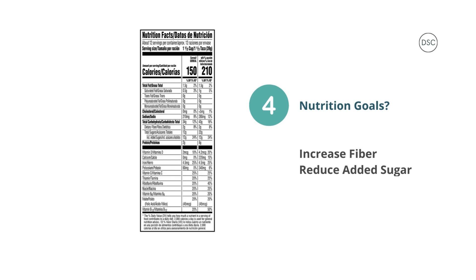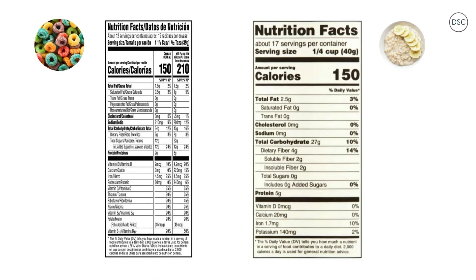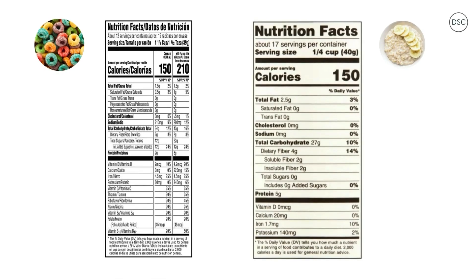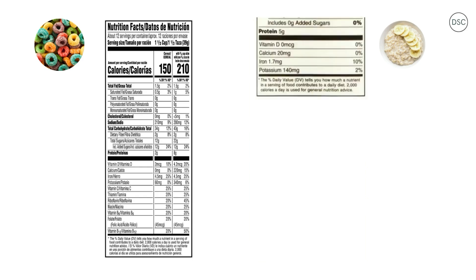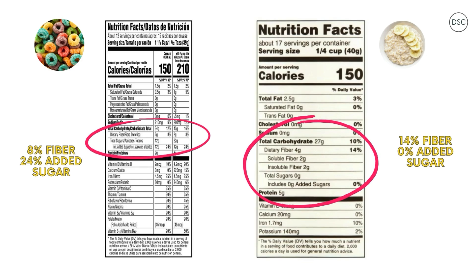Step four is to determine which nutrients you are aiming for more or less of depending on your nutrition goals. Let's say that we are looking to increase fiber and reduce added sugars. This brings us to step five, where knowing this information, we can compare the food with another one to choose the best option for us. Comparing to steel-cut oats: for a quarter cup of dry oats, we get 14% fiber and 0% added sugar. So if I'm looking for an option with less sugar and more fiber, I'm better off choosing the oats and adding some nutritious inclusions like fresh fruit, nut butter, or seeds.